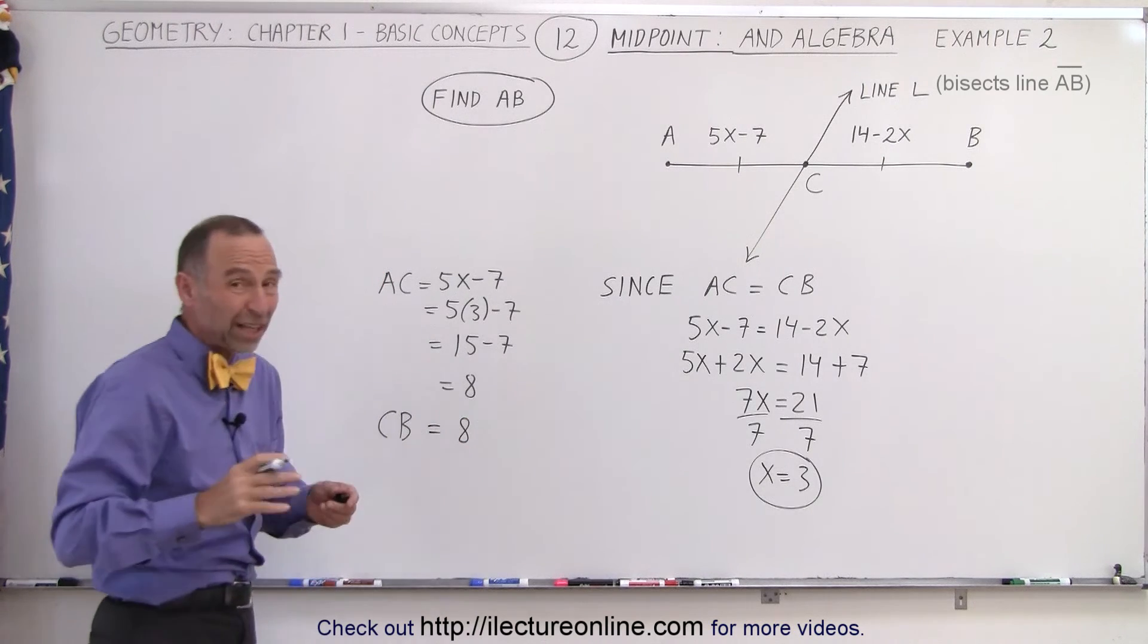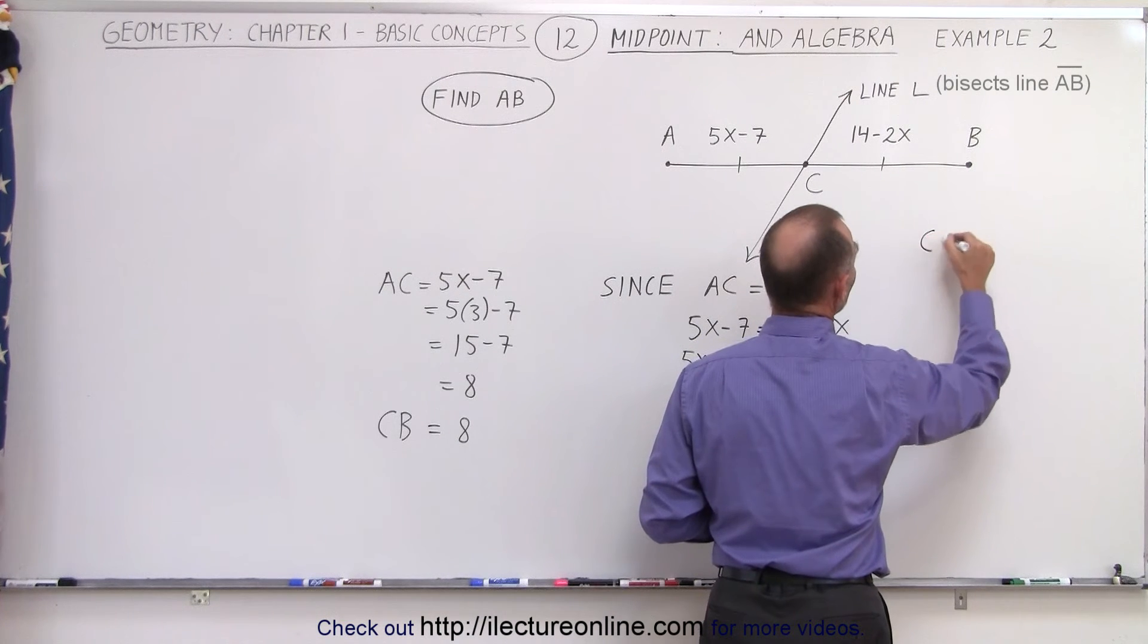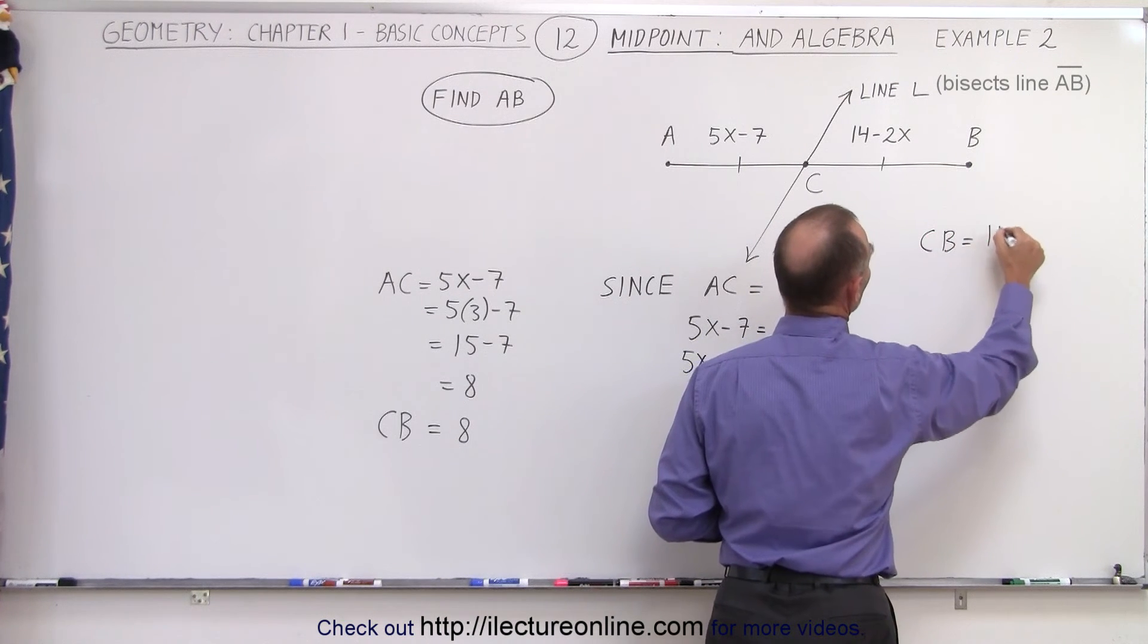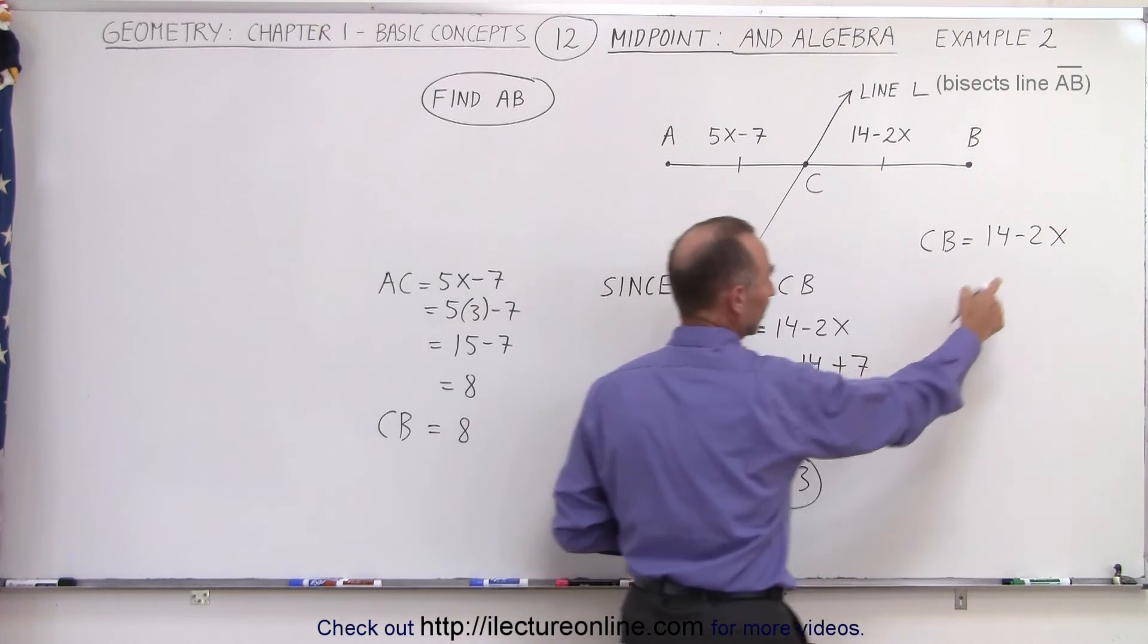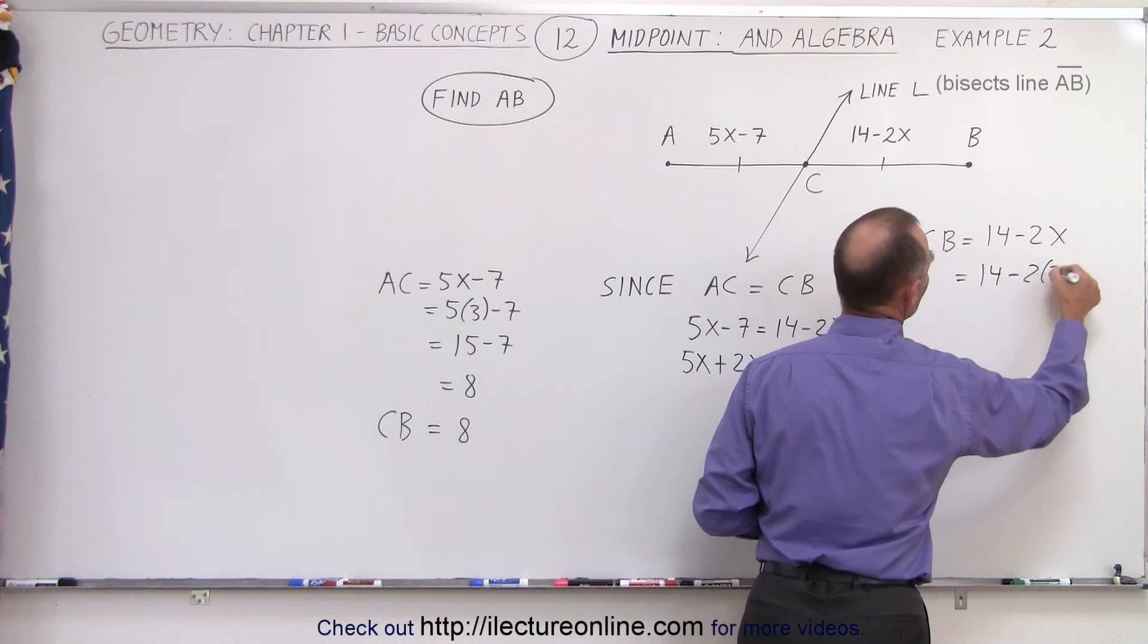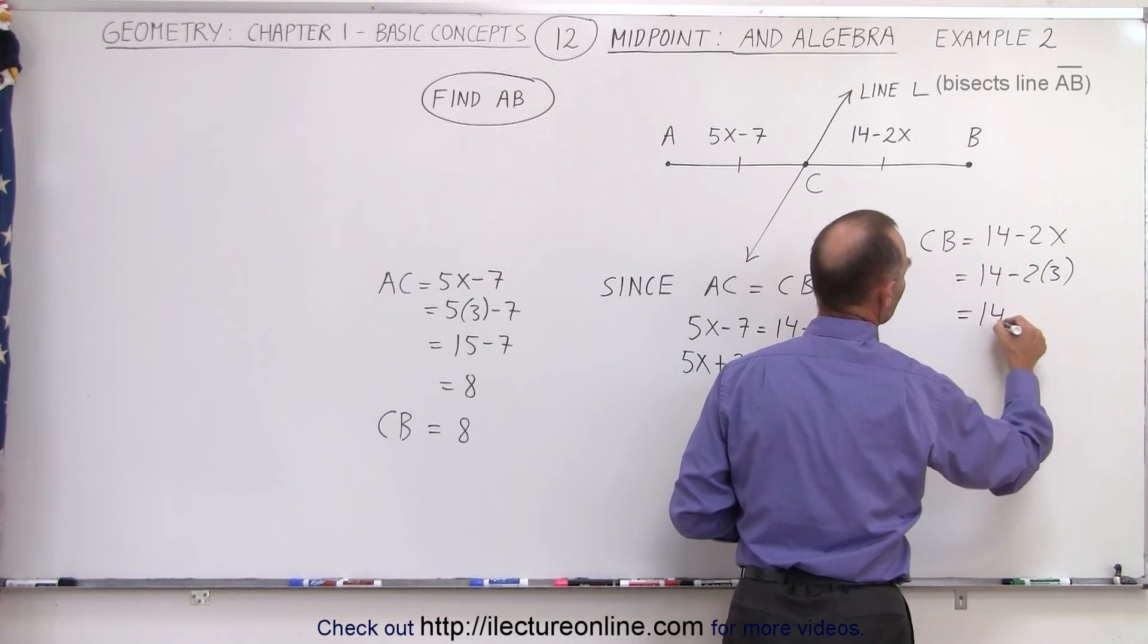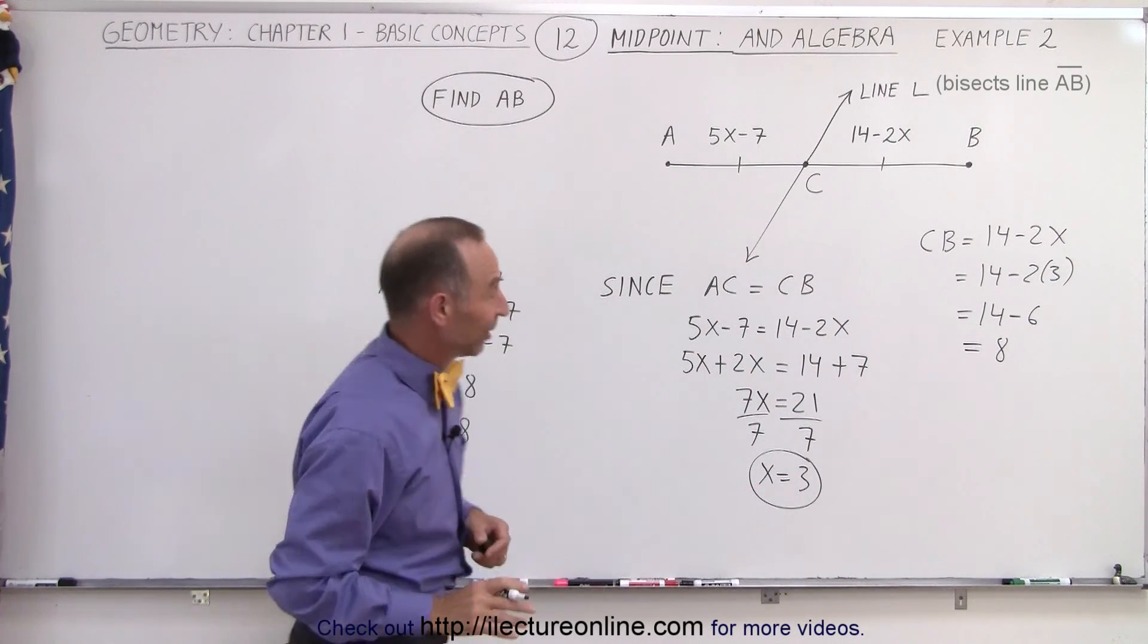And we can check that really quick because if x is equal to 3, then we can write C to B is equal to 14 minus 2x. And then we plug in the value for x in here and see what we get. That's equal to 14 minus 2 times 3 or 14 minus 6, which indeed, as we suspected, is equal to 8.